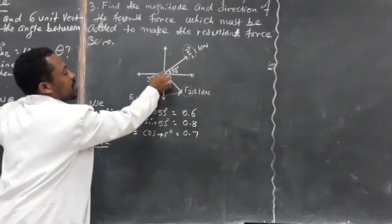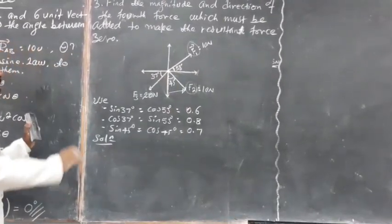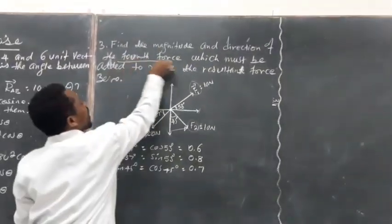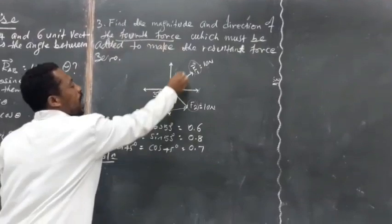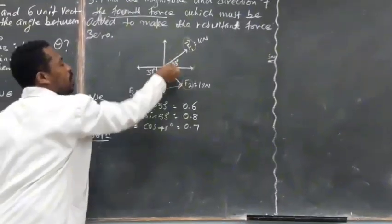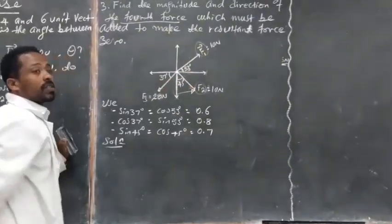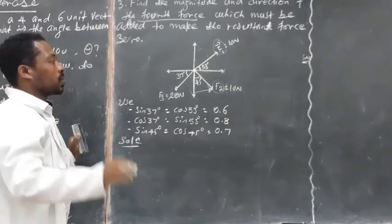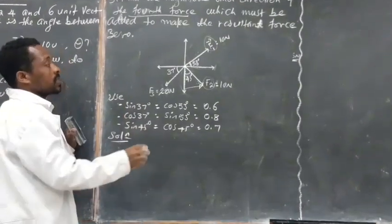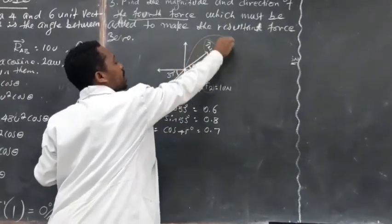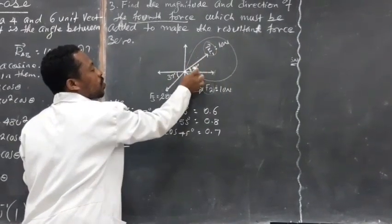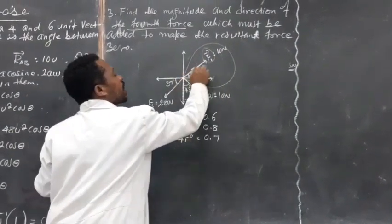It represents the concurrent vectors. To find the fourth vector, first we have to find the resultant vector of the three vectors. And what we have to do first is find the component vector of each vector.